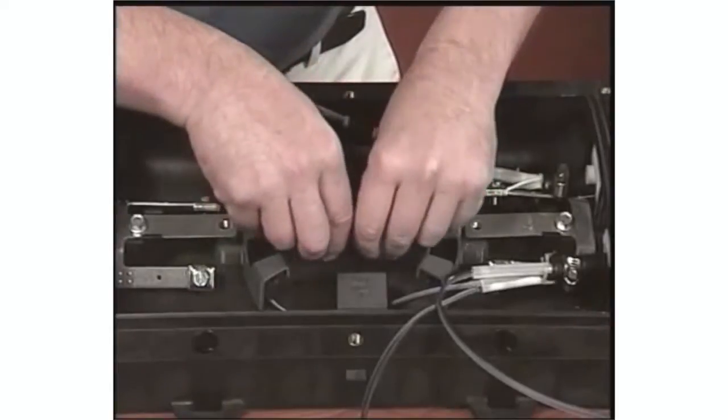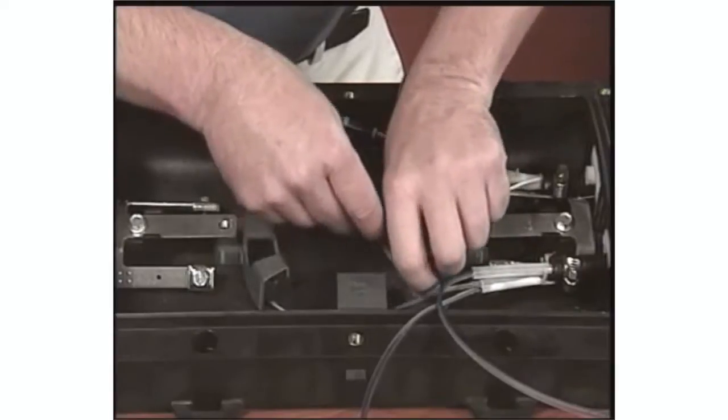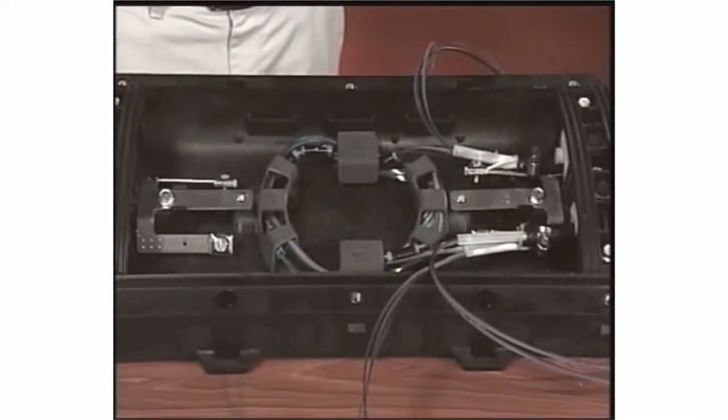Start from one end and route the fiber into the storage clips in a clockwise direction until the entire slack loop is stored.